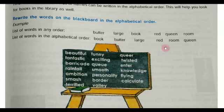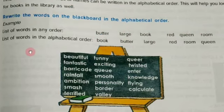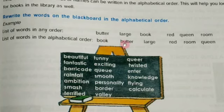These are arranged in any order. Now here is the list of words in alphabetical order. First comes 'book,' then 'butter,' because the second letter 'u' comes after 'o.' Both words start with B, but 'bu' comes after 'bo,' so butter follows book.